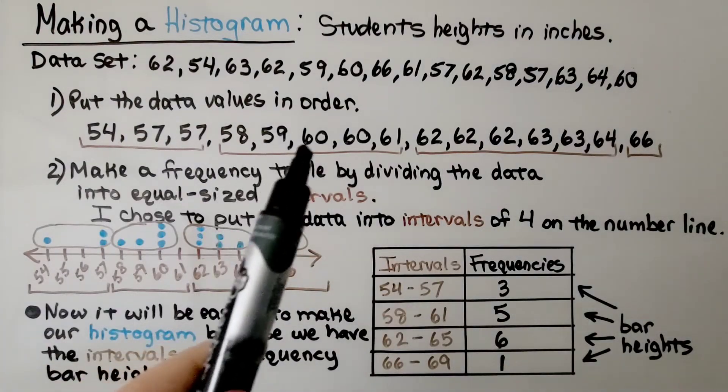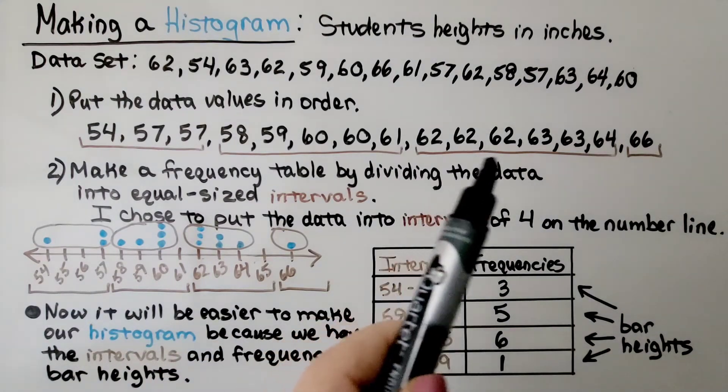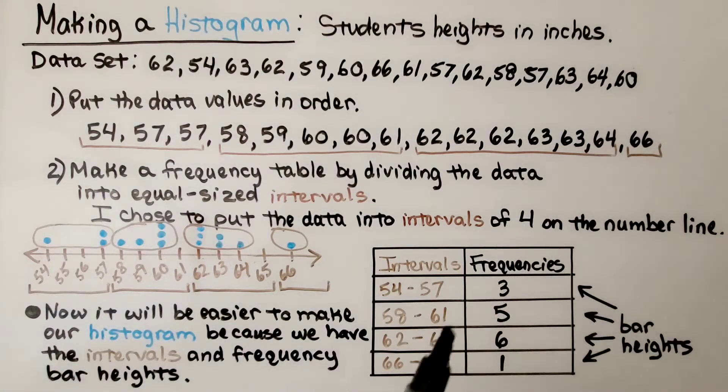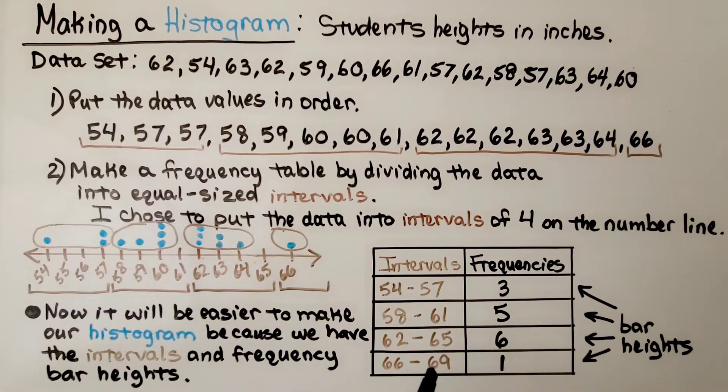We have 3 here. We have 1, 2, 3, 4, 5 values for that interval. And 1 value for the last interval. And these frequencies are going to be our bar heights for our histogram. Now it's going to be easier to make our histogram because we have the intervals and frequency bar heights.